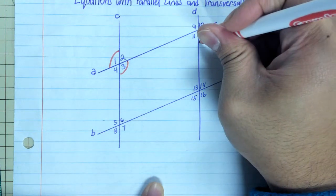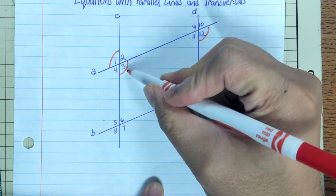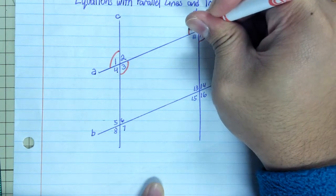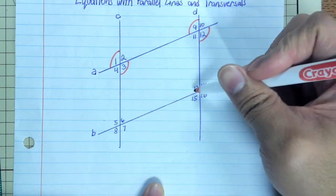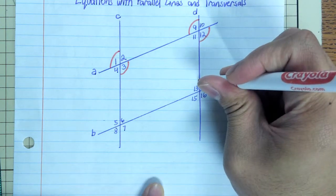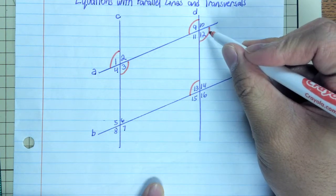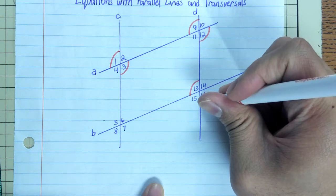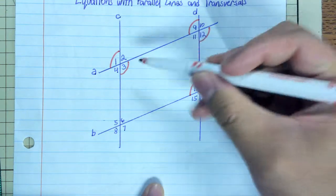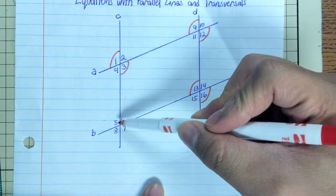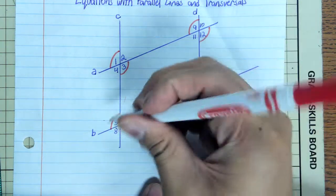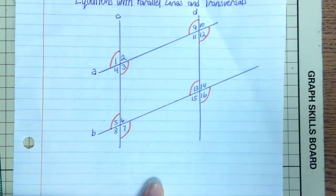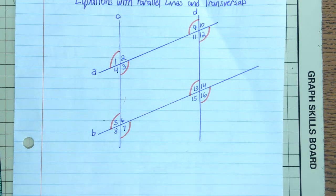Angle three with angle nine are alternate interior angles. Keep going. We have nine and thirteen being corresponding, we have twelve with sixteen corresponding, we have three with five being alternate interior angles, and one with seven being alternate exterior angles.